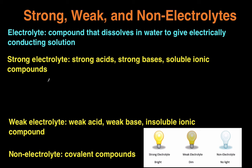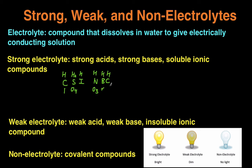For strong acids, you can remember this mnemonic to help you determine if something's a strong acid: it's to show CSI on the network NBC. And the seven strong acids are HCl, H2SO4, HI, HNO3, HBr, HClO4, and HClO3. So those are the seven strong acids.